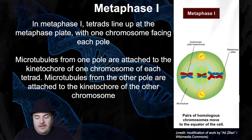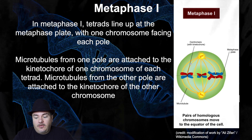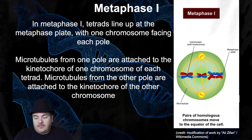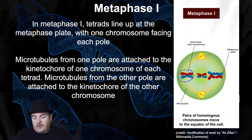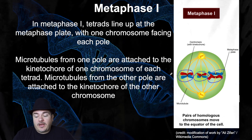After prophase one, you have metaphase one. In metaphase of mitosis, chromosomes line up down the middle of the cell. In metaphase one of meiosis one, chromosomes also line up down the middle of the cell, but they line up as homologous pairs — chromosome one and the other chromosome one, two and two, three and three, lined up down the middle. That does not happen in mitosis or meiosis two.